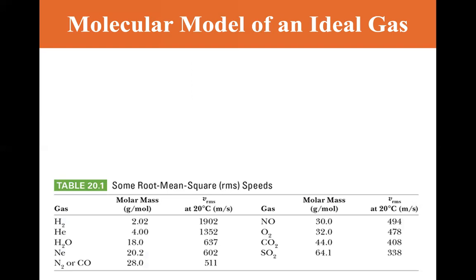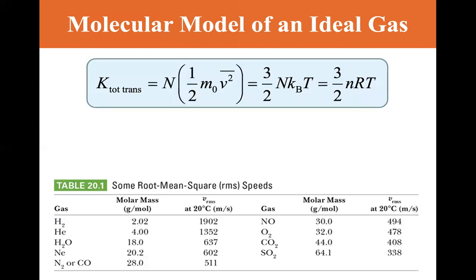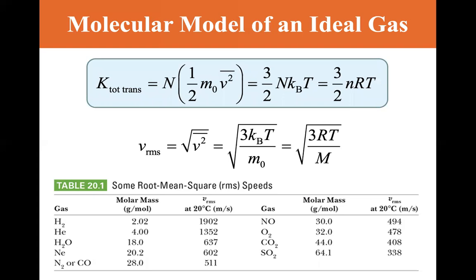Here are some common root-mean-square speeds. The total translational kinetic energy equals N times one-half m₀ v², which equals (3/2) N k_B T, which also equals (3/2) nRT. The factor of three comes from having one-half k_B T each for the x, y, and z directions. The root-mean-square speed v_rms is the square root of the average v² — equal to the square root of 3k_BT over m₀, or equivalently the square root of 3RT over the molar mass M. A table of common root-mean-square speeds is shown.